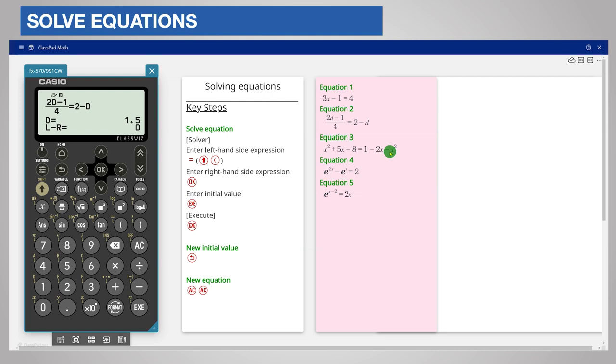Return to the input screen as before using the all clear key. Enter the quadratic expression on the left hand side and the equals sign, and now enter the expression on the right hand side. Press ok or the execute key to enter it in the calculator.